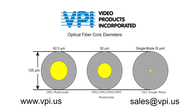Single-mode cables have a small diameter 9-micron core, allowing one pathway of light. Multi-mode cables have two different large diameter core sizes — 50 and 62.5-micron — allowing multiple pathways of light.